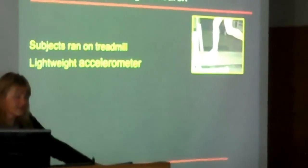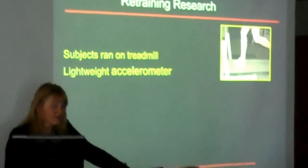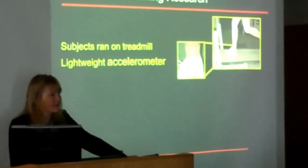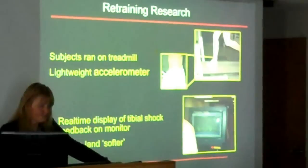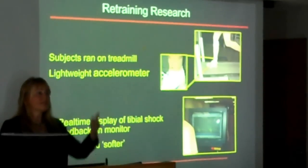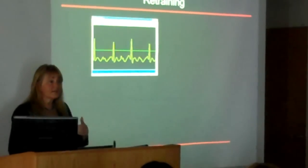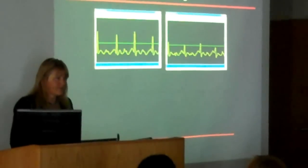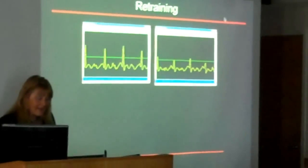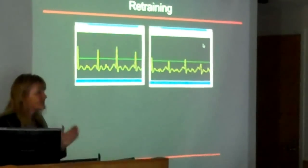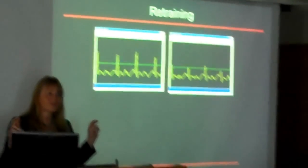So basically what we do in this particular line of retraining research, subjects run on a treadmill and they have a very lightweight, about three grams, accelerometer that is attached to the distal tibia. And then we display in real time their tibial shock with each foot strike. Let me just show you what it looks like. So this is their pre-training tibial shock, it almost looks like an EKG. Each one of those peaks is associated with a foot strike. This is what happens immediately. We can get this kind of reduction right away by giving them that feedback and telling them to land softer. They can do it immediately.